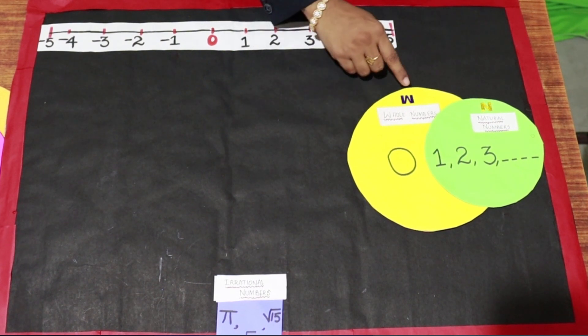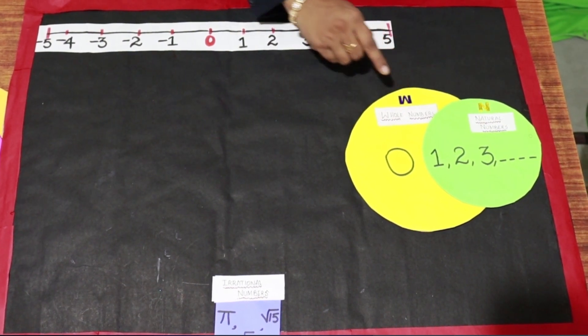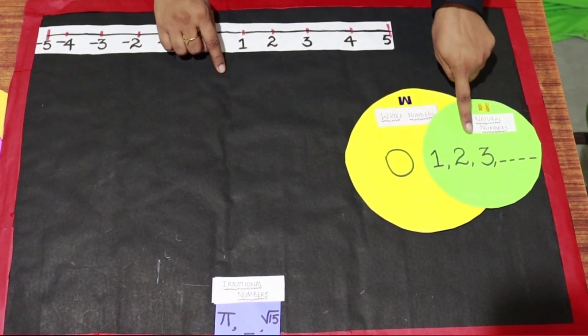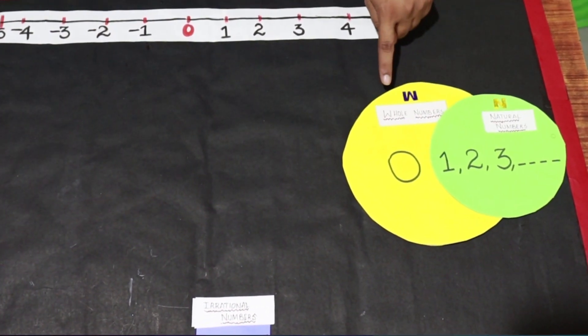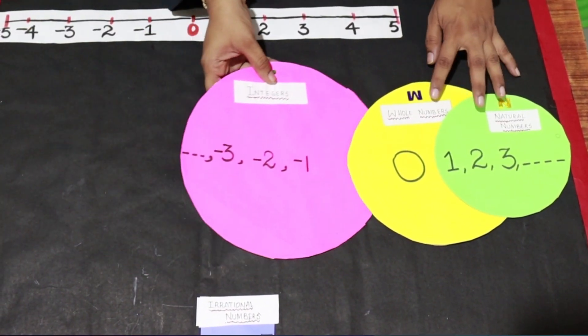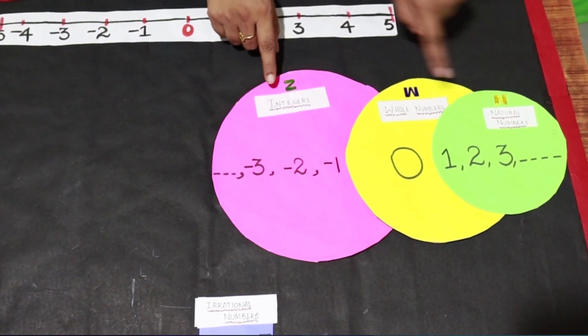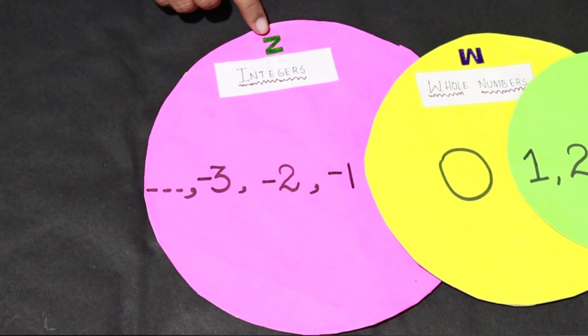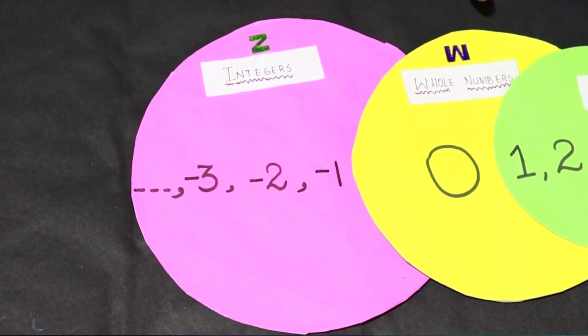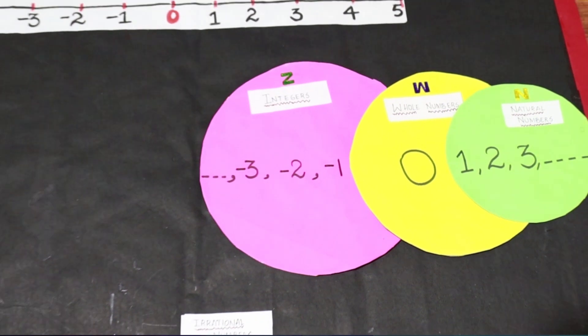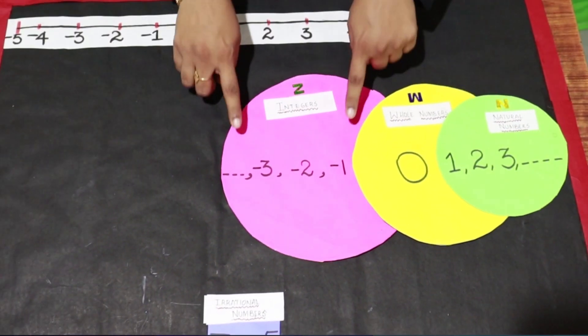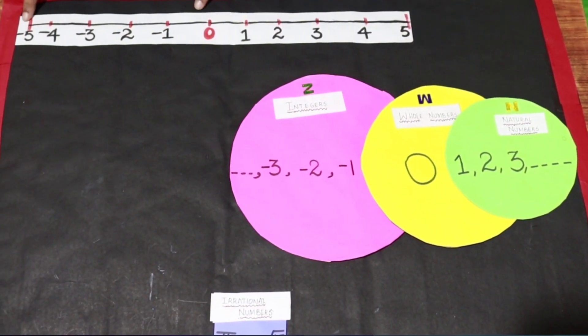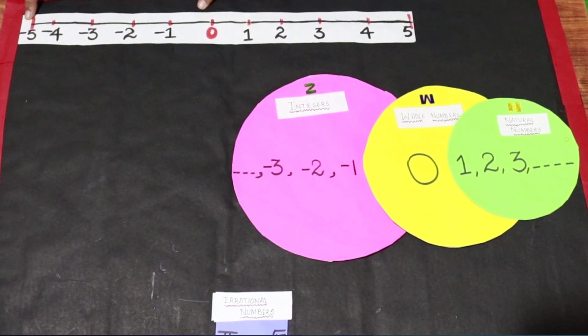Whole numbers are denoted by the letter W. Now positive numbers, zero and negative numbers gives the set of integers. Integers are denoted by the letter Z. We find positive numbers on right side of zero on number line. Negative numbers on left side of zero on number line.